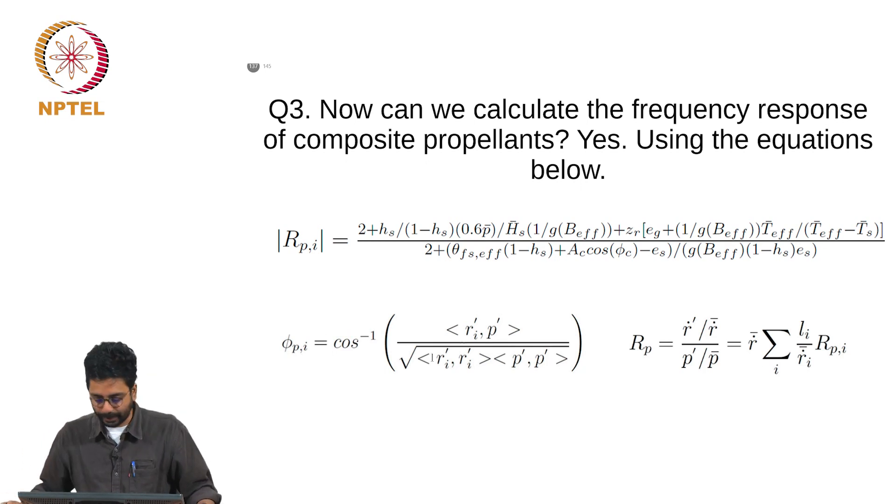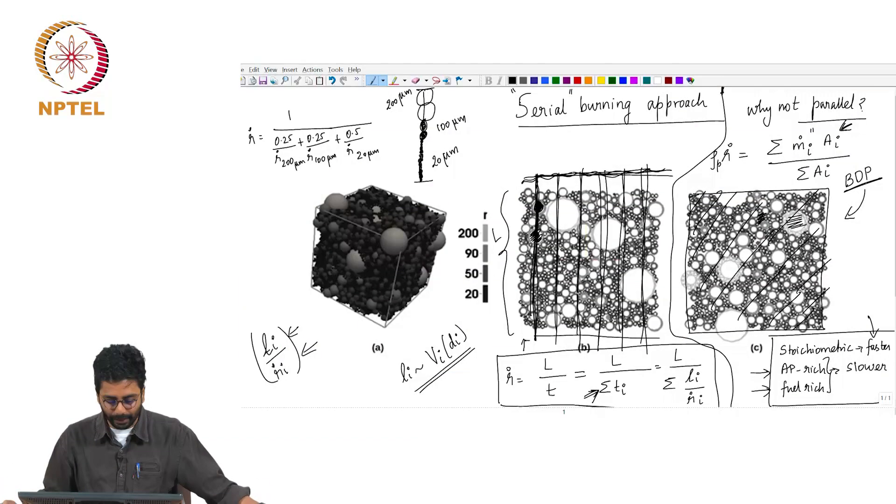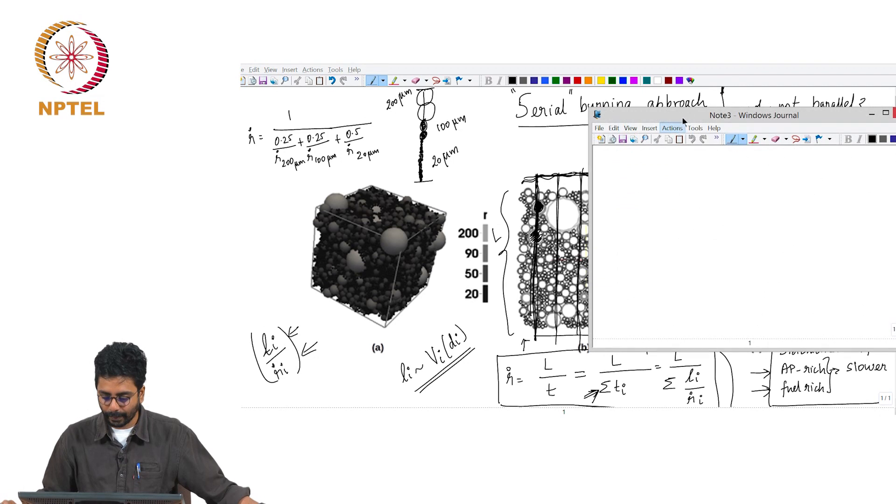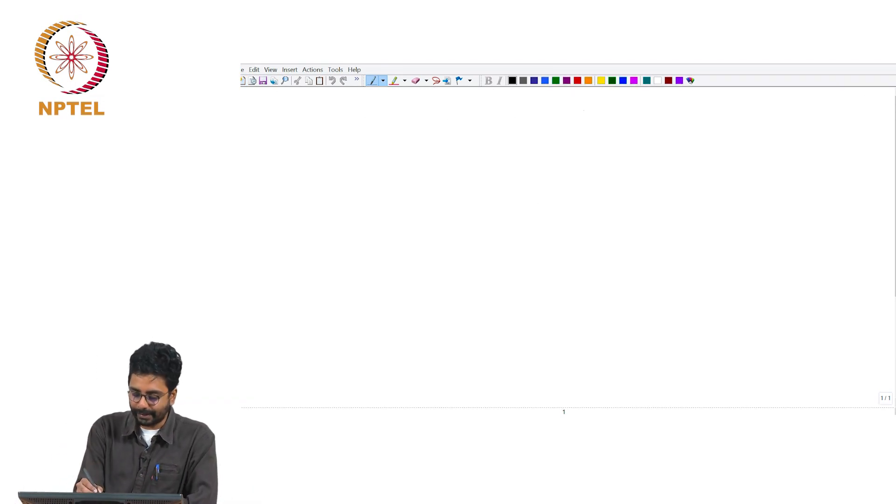Don't worry about this equation. We have a set of equations that describe the steady-state behavior of the model. All that is done is a simple perturbation analysis where the pressure is taken to be mean pressure plus perturbation, corresponding to perturbation in r dot and other variables.